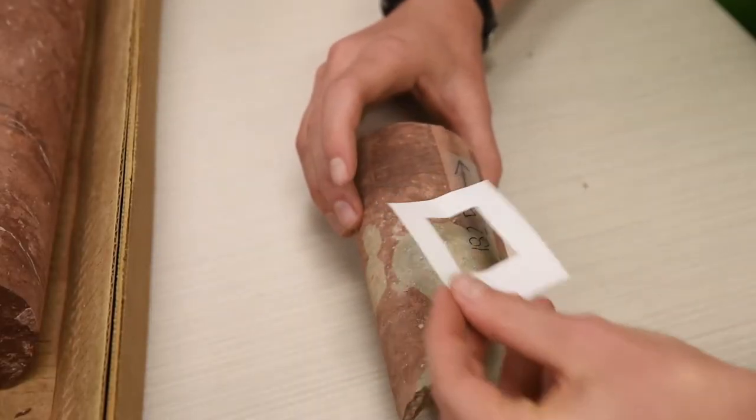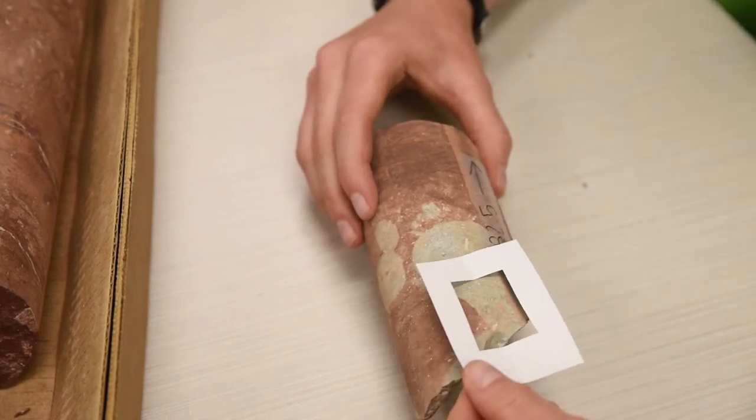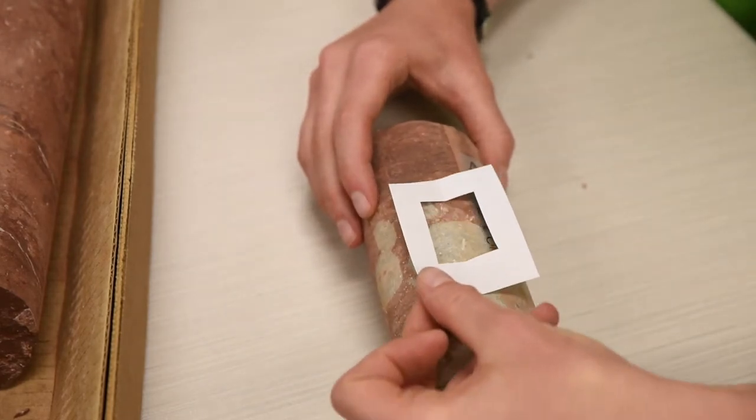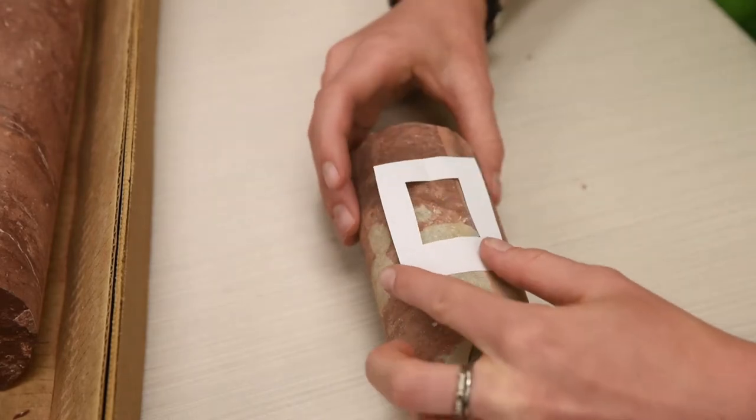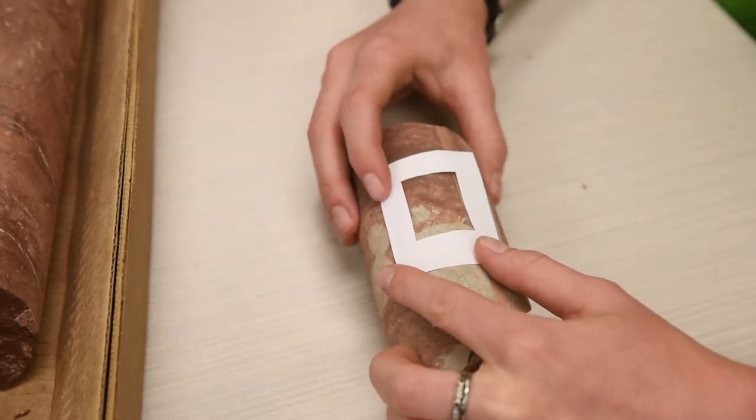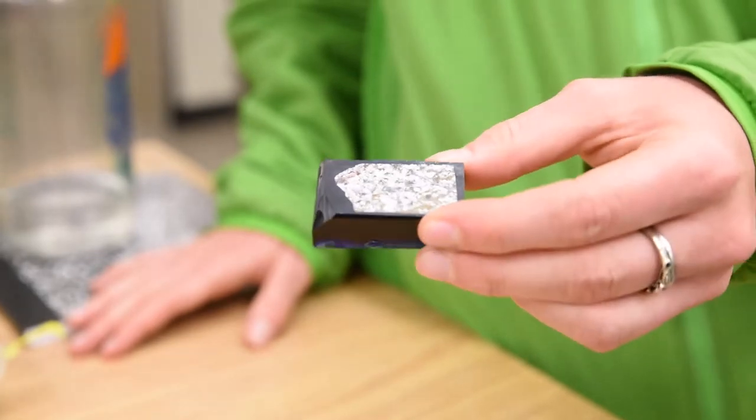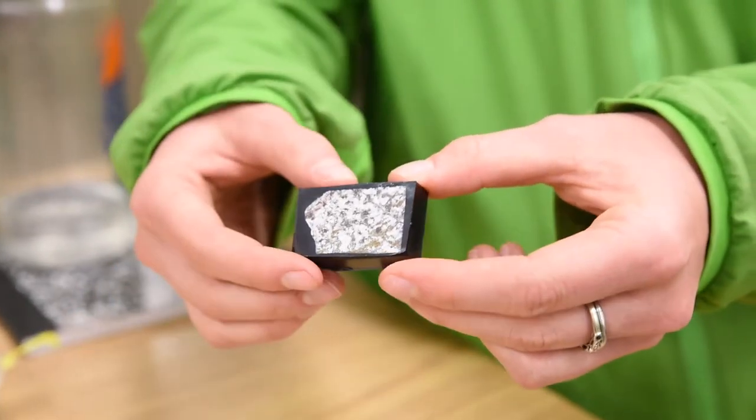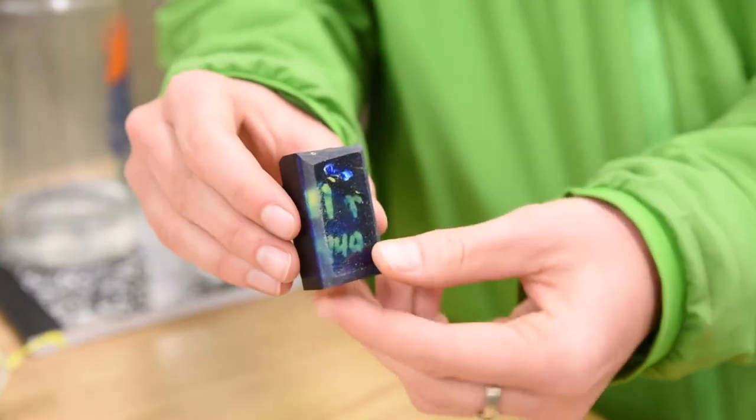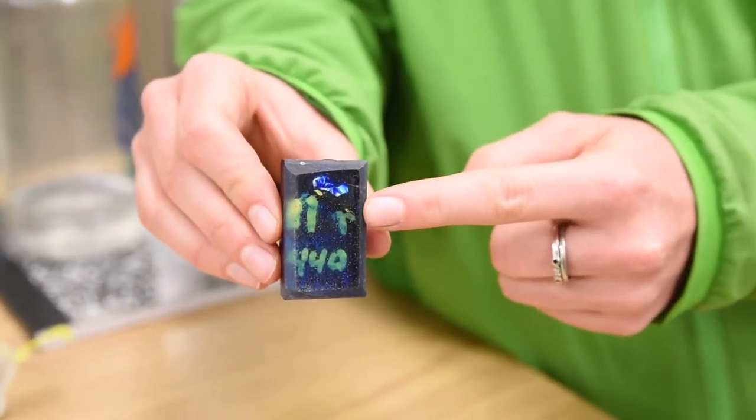We first choose where on the rock we want to take a closer look. In general, we target interesting structures, alteration features, or changes in rock type. Then, we cut the rock into what are called billets, which are smaller, evenly cut pieces of the rock that can be glued to the glass microscope slide.